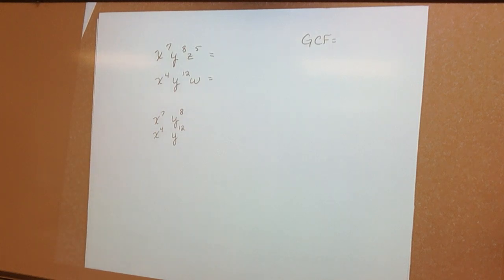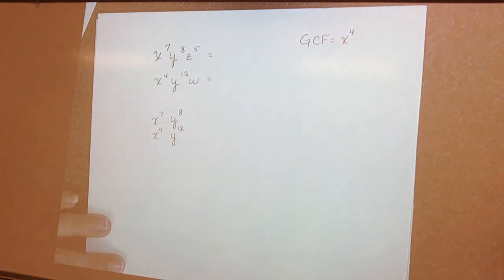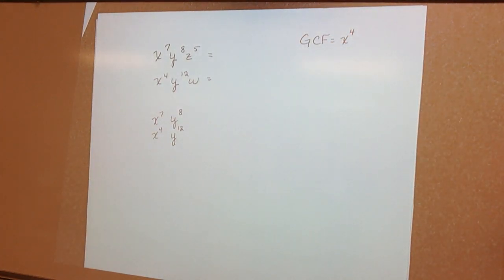Alright? Now, if you remember, when we are doing this, we've got to look at how many they have in common here. Well, this one has 7, this one has 4. So they really only have 4 in common. So, X to the 4th.